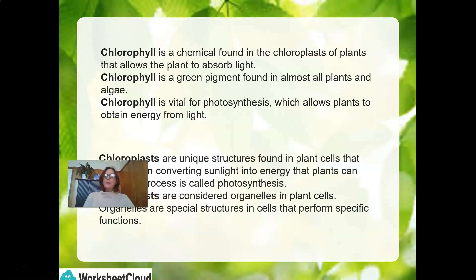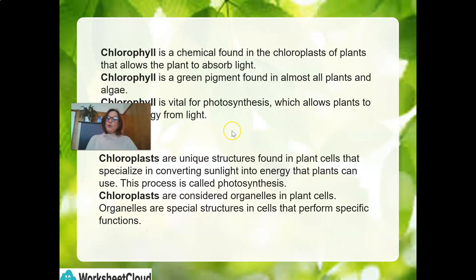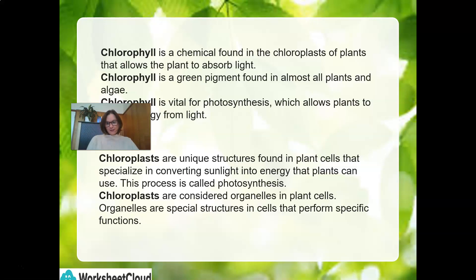Let's take a close look at chloroplasts. Chloroplasts are unique structures found in plant cells that specialize in converting sunlight into energy that plants can use in the process of photosynthesis. Chloroplasts are considered organelles in plant cells, and organelles are special structures in cells that perform specific functions. You can pause here to read through again and understand the difference between chlorophyll and chloroplasts.